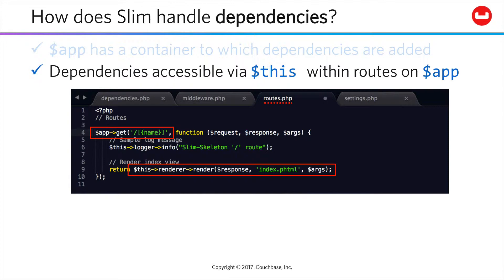And then within that function, we could access the renderer function created over in our dependencies file through this reference. And whatever features are available through that, such as this render method, we could use them within our route, as shown here.